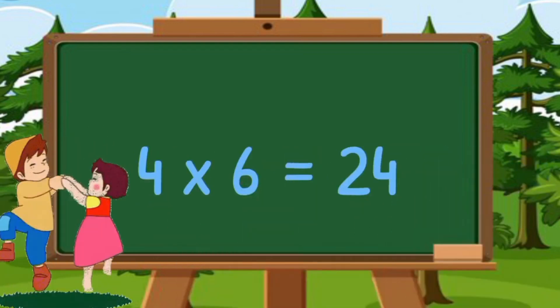Five sevens are thirty-five. Five eights are forty. Five nines are forty-five. Five tens are fifty. Table of six.